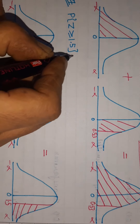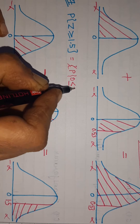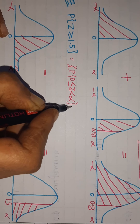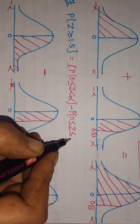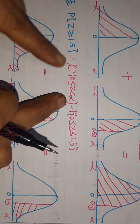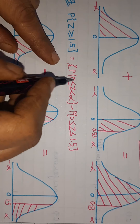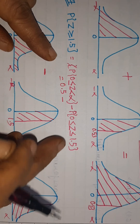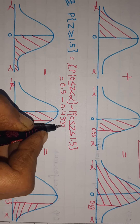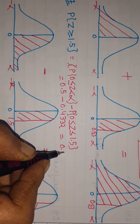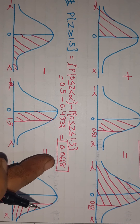So the area for Z greater than or equal to 1.5 is 0.0668.